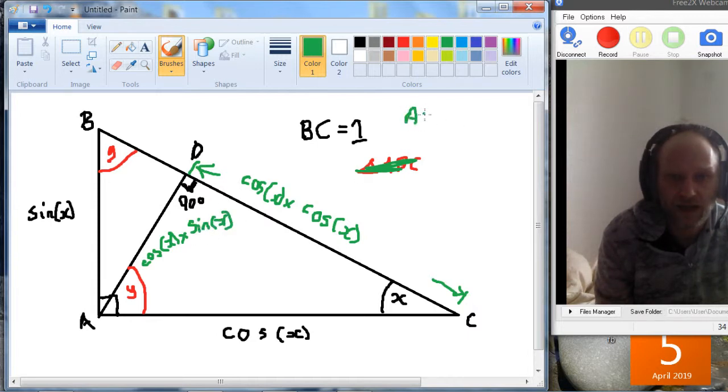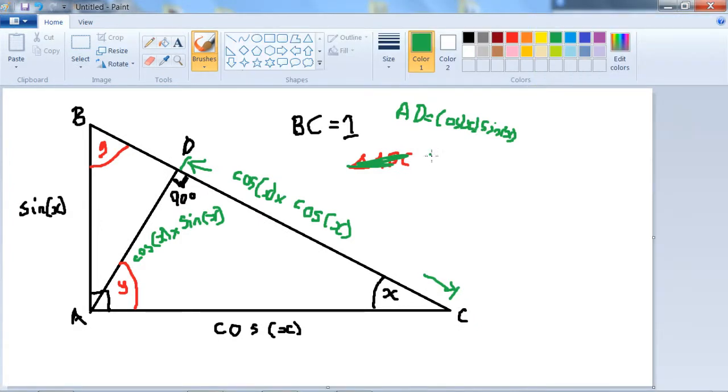So AD is cos X times sine X, and DC, a shorter way to write it is cos squared X. That just means times itself, so DC is cos squared X. And let's remember this angle here is X.